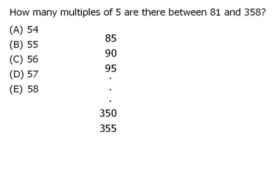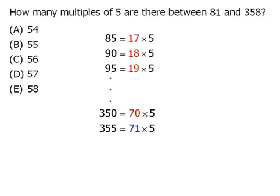Since each of these numbers is a multiple of 5, we can rewrite them as follows. 85 is equal to 17 times 5, 90 is equal to 18 times 5, and so on.